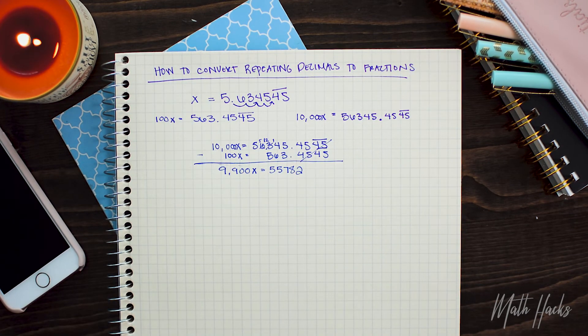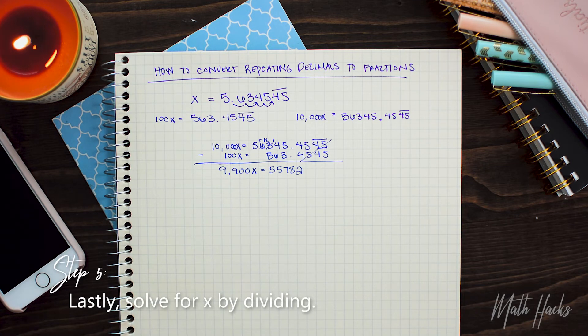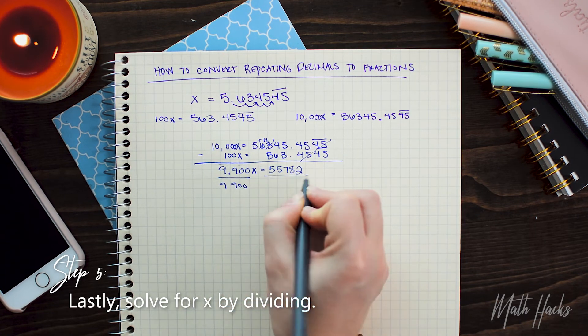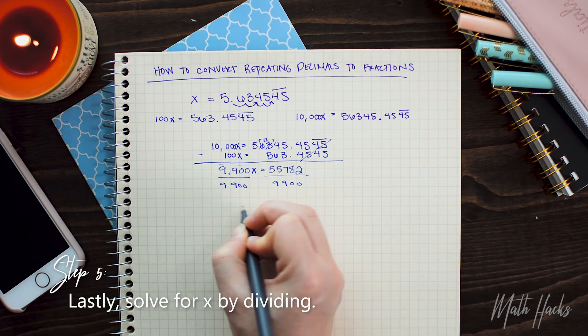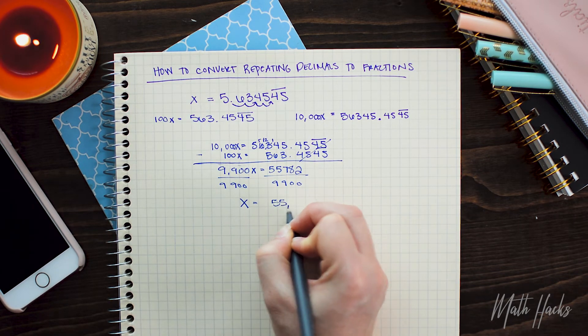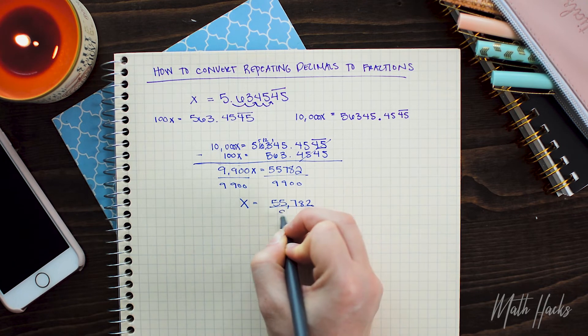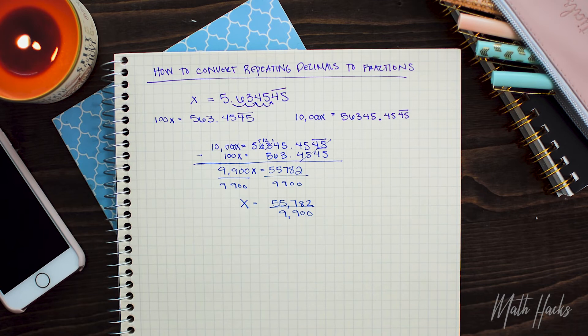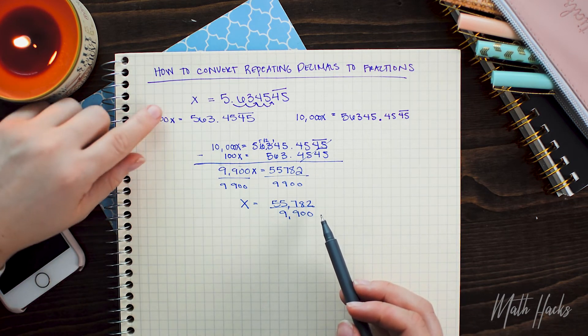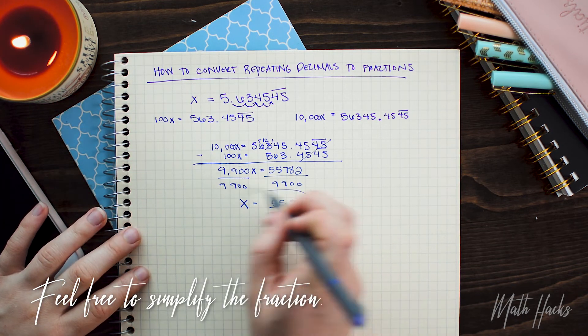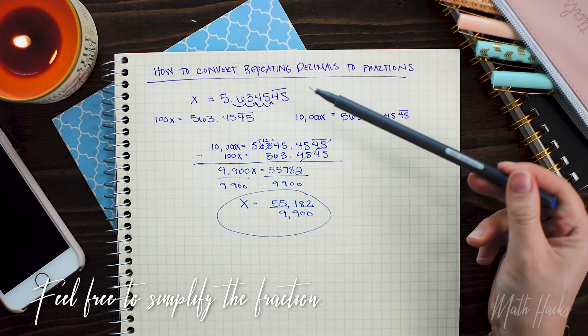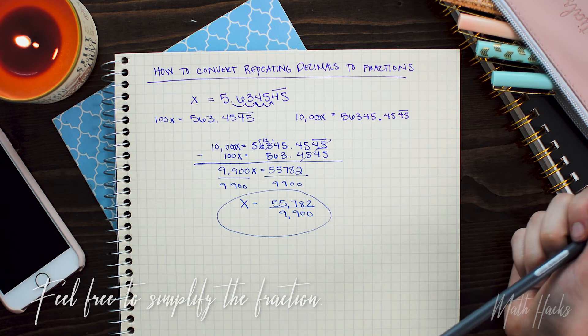And for our final step here, to convert this into a fraction, we're just going to solve for x. And we can do this by dividing both sides by that 9,900. So we get x equals 55,782 over 9,900. And that is actually the answer. That is the fraction equivalent to this original decimal up here. Of course, you can check that with your calculator simply by dividing these two numbers to ensure that you do get 5.6345 repeating.